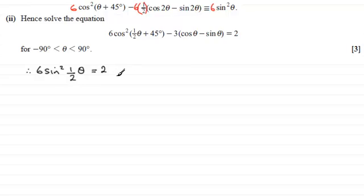So it's just a question of solving this equation from here on. So what I'm going to do is divide both sides by the 6, so therefore I'm going to get sin²(½θ) is going to be equal to 2 sixths or 1 third.